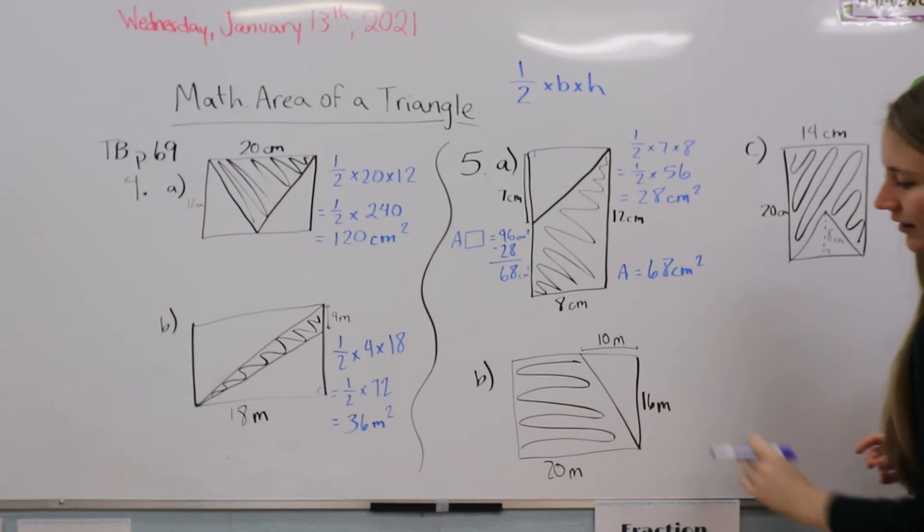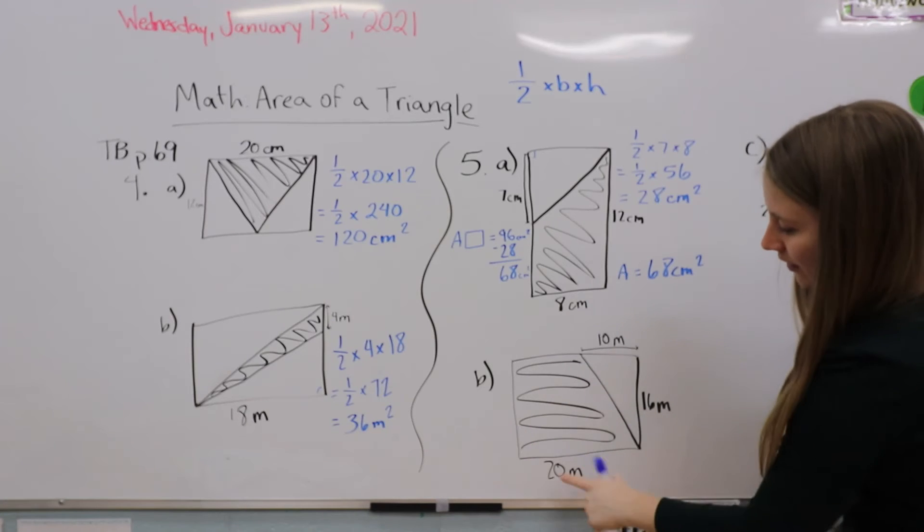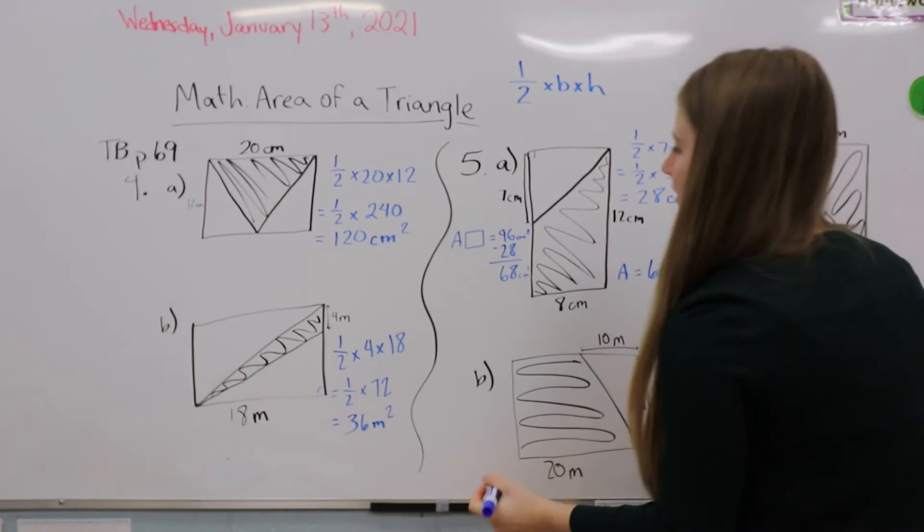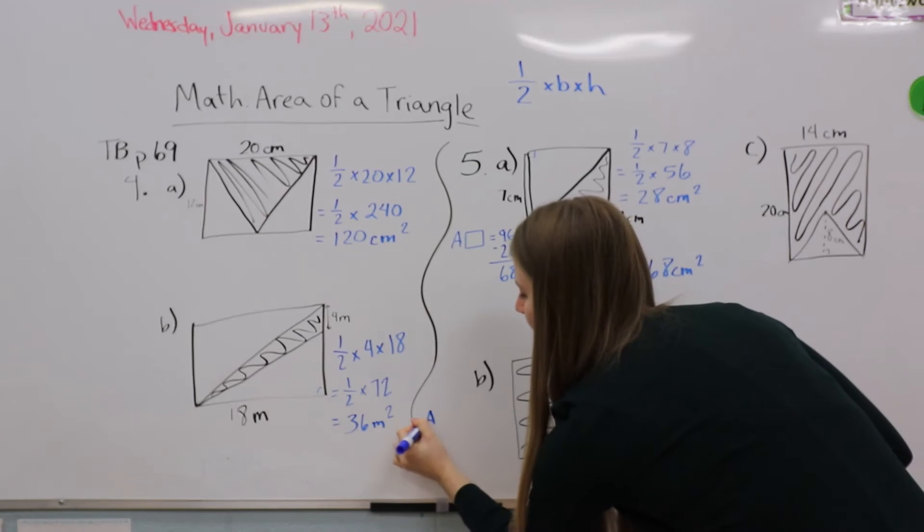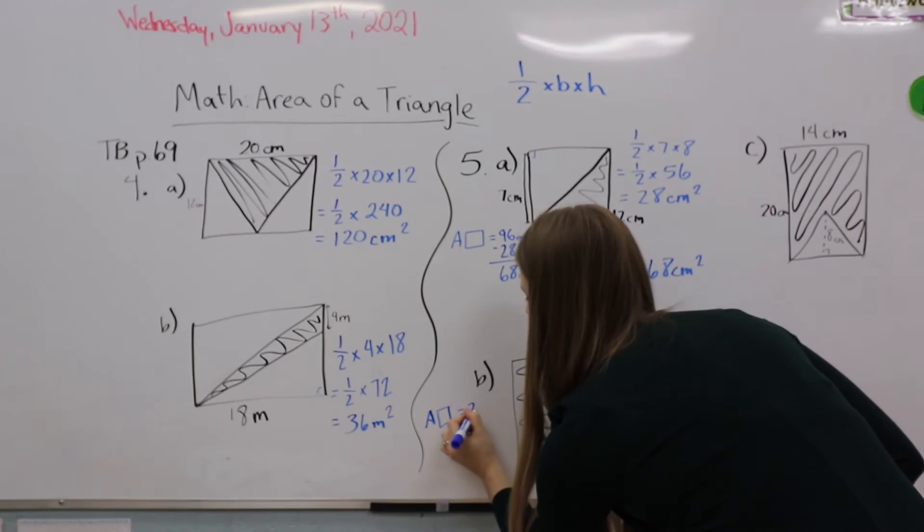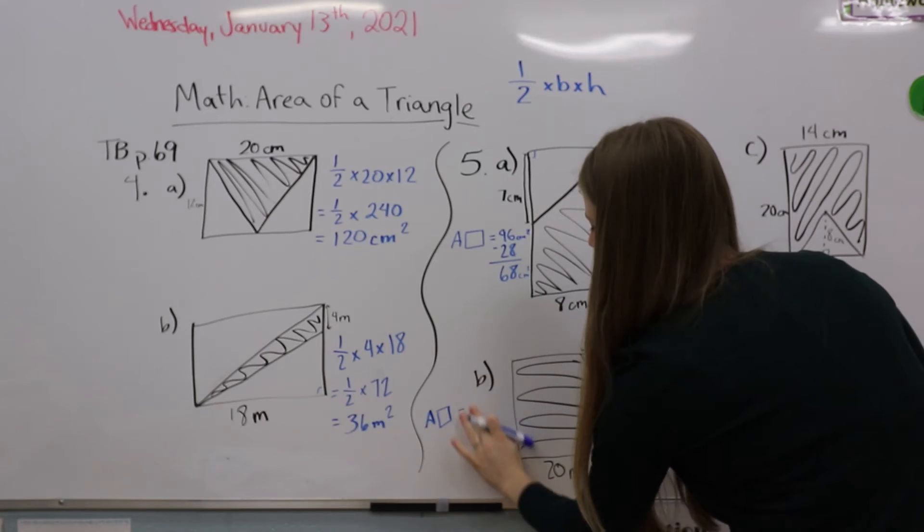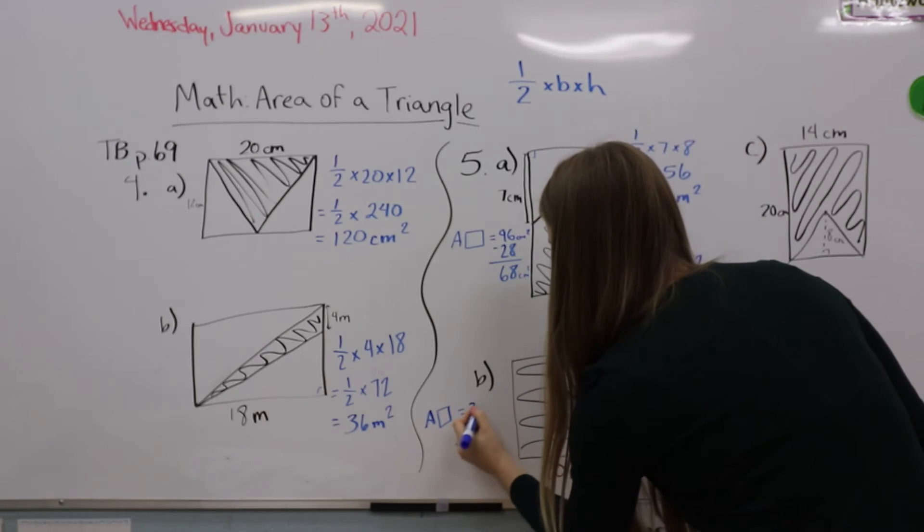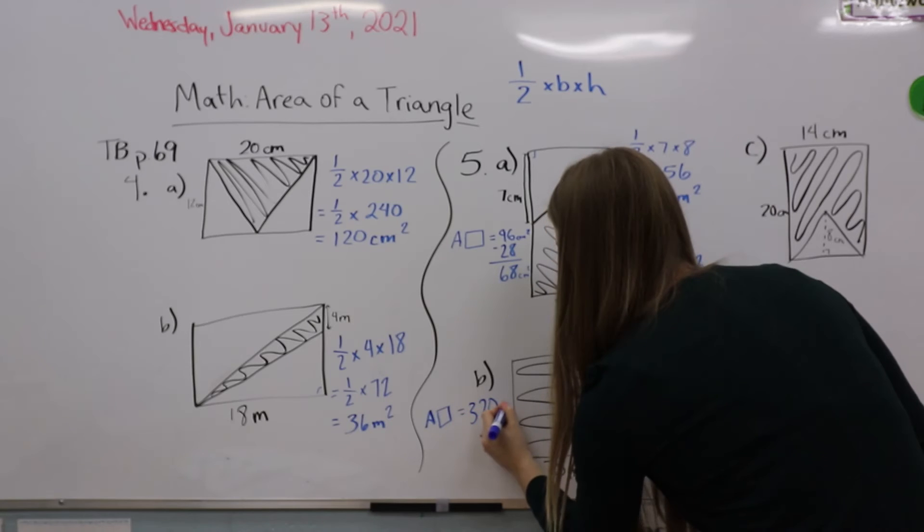For B, our rectangle is 20 meters by 16 meters. So again, let's start there. Area of the rectangle equals 320 meters.